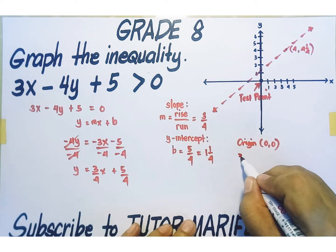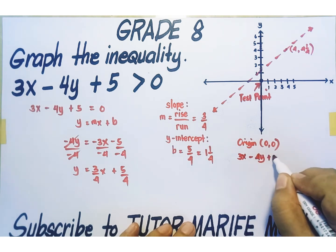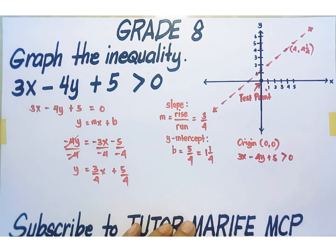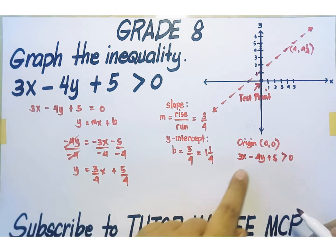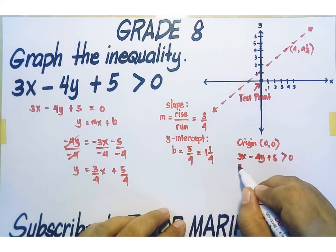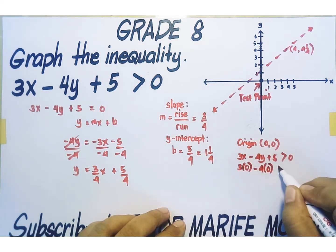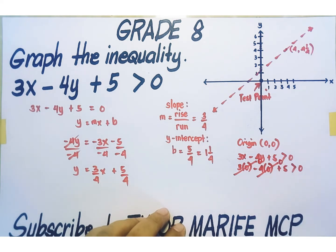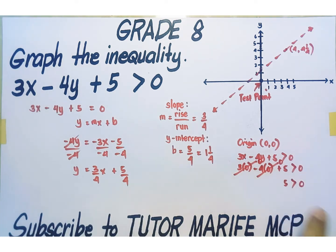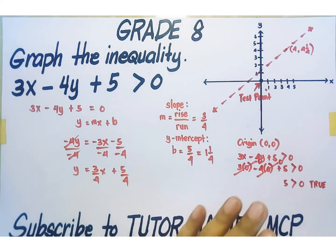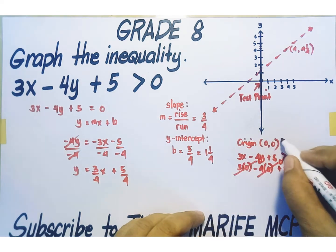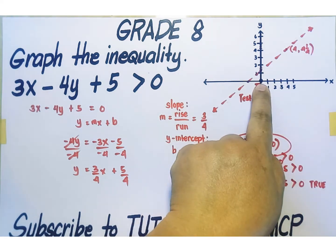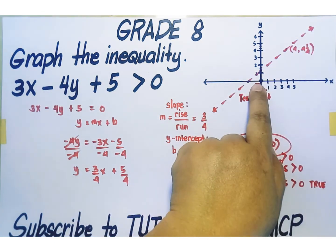Our inequality is 3x minus 4y plus 5 is greater than 0. Let's find out if we end up with a true inequality statement. Replace x and y with 0: 3 times 0 minus 4 times 0 plus 5 is greater than 0. Any number multiplied by 0 equals 0, so we get 5 greater than 0. This is a true inequality statement. Therefore, we are going to shade the half plane that contains our test point.